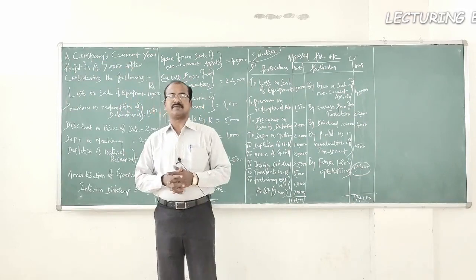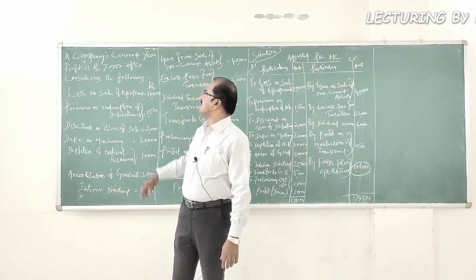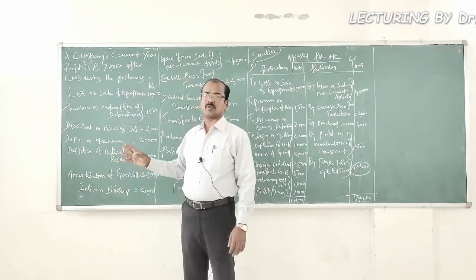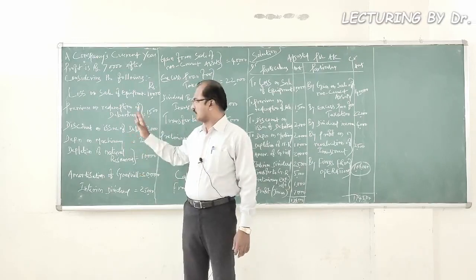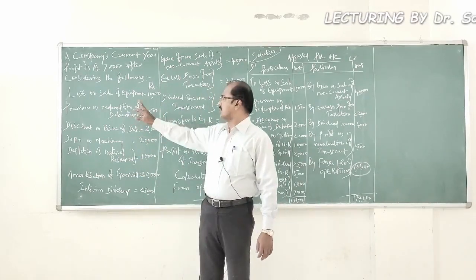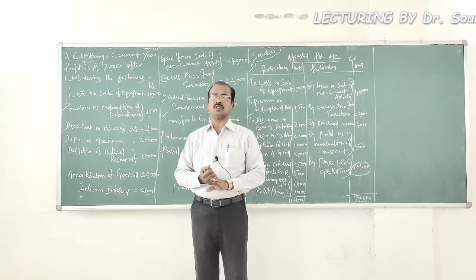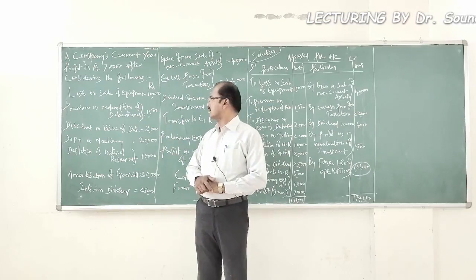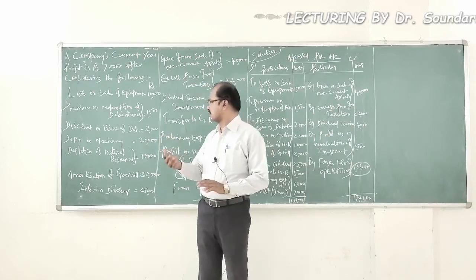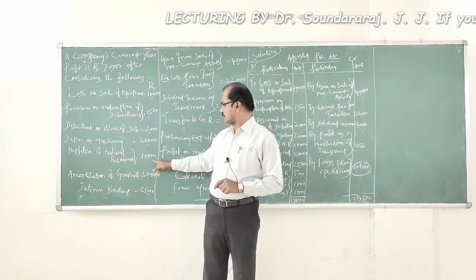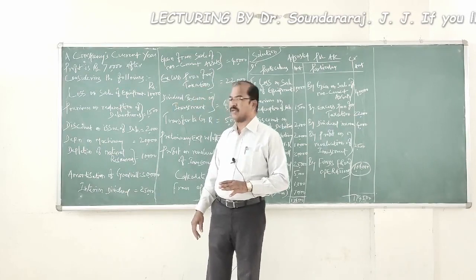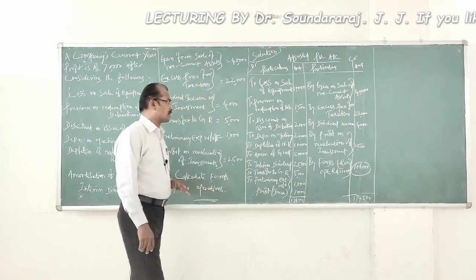Let us get into the details of the problem. A company's current year profit is 70,000 rupees after considering the following accounting information: number one, loss on sale of equipment 10,000; number two, premium on redemption of debentures adjusted through the profit and loss account 1,500; discount on issue of debentures written off 2,000 rupees; depreciation of machinery 20,000; depletion of natural resources 10,000; amortization of goodwill 30,000 rupees; interim dividend 25,000 rupees.